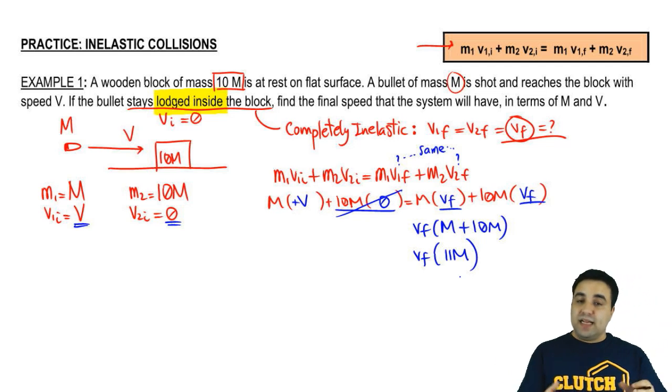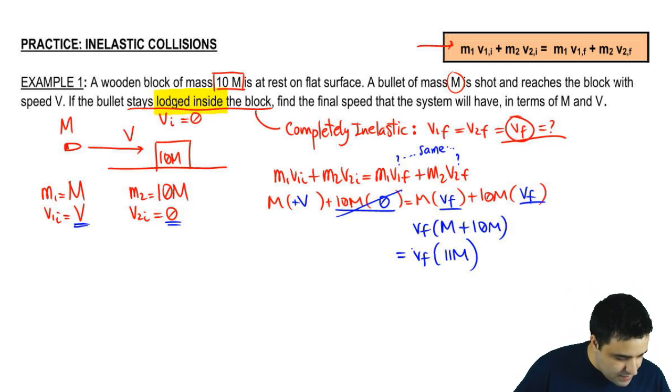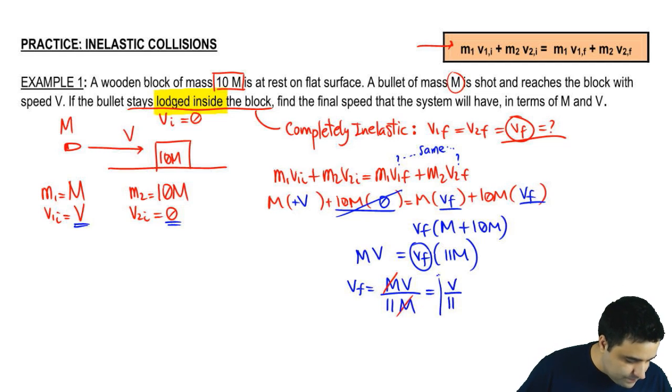Again, another way to think about this is that it acts as a single object of mass combined, right? And this stuff on the left here is just MV. We're looking for V final. So V final is MV divided by 11M. Notice that the masses will cancel. And we get that V final is V over 11. That's the answer.